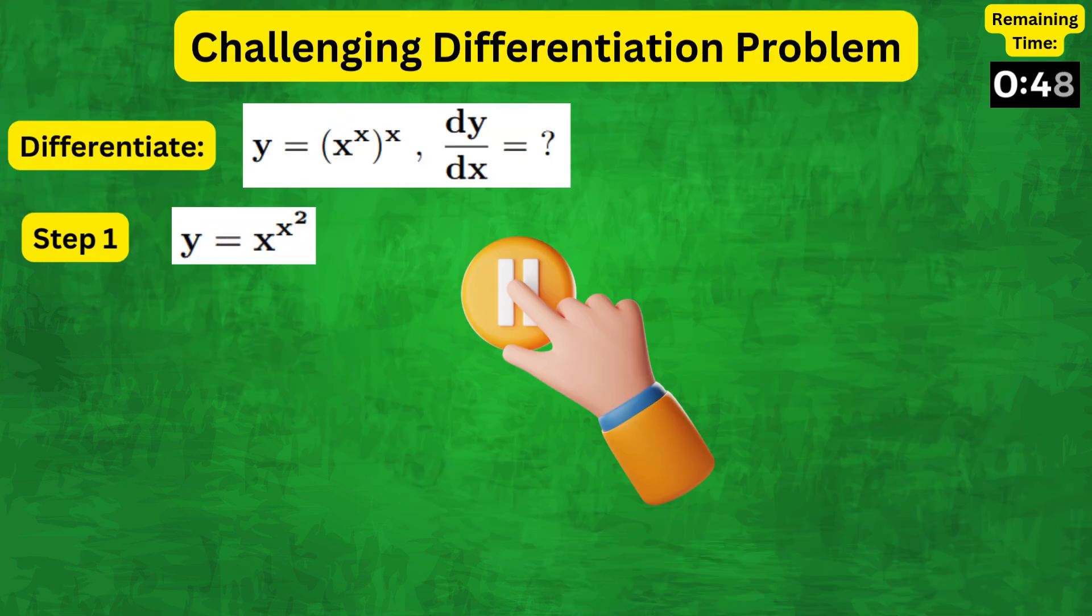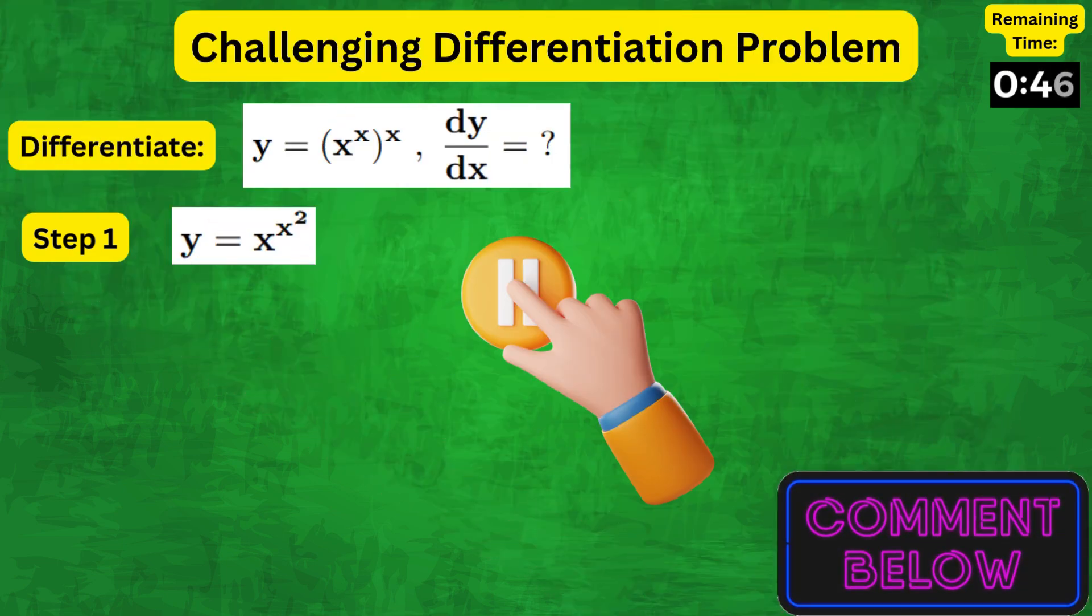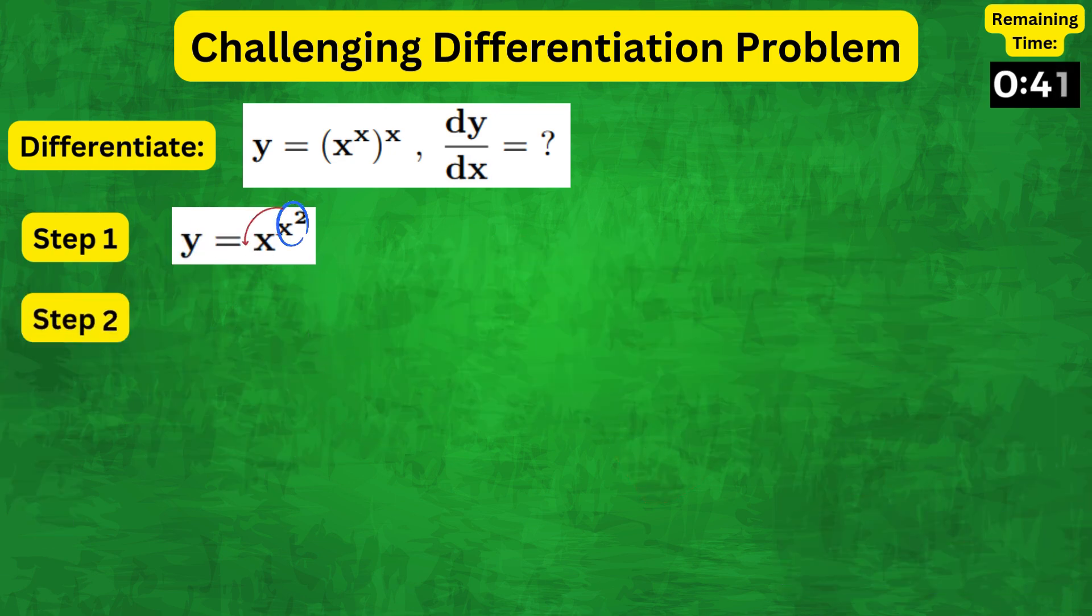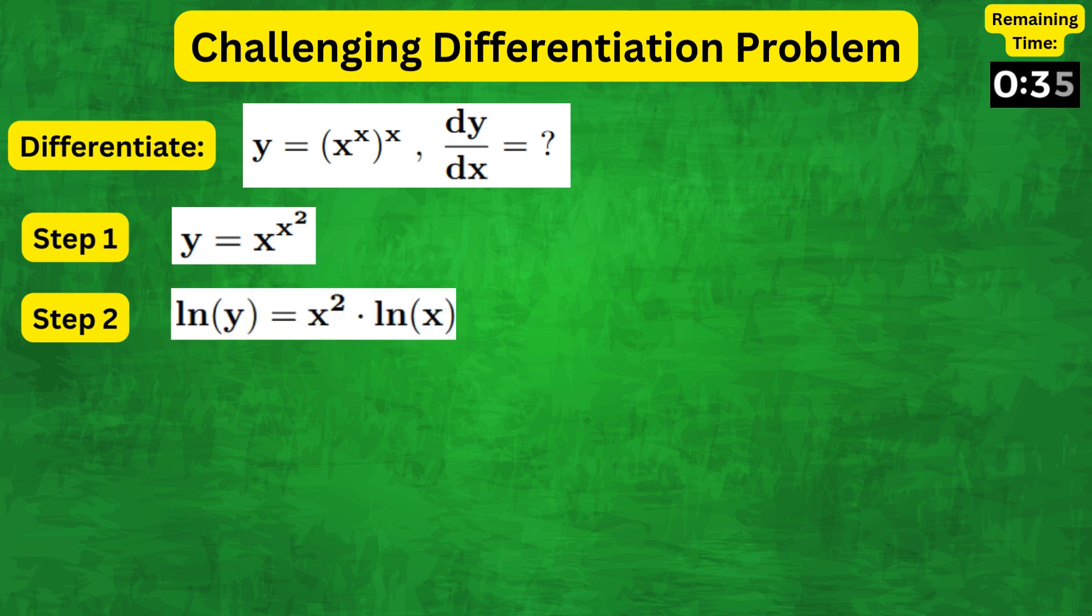Now, what is the best way to handle x in both the base and the power? That's right! To bring down this x, we can take natural logs on both sides to get natural log of y equals x squared natural log of x.